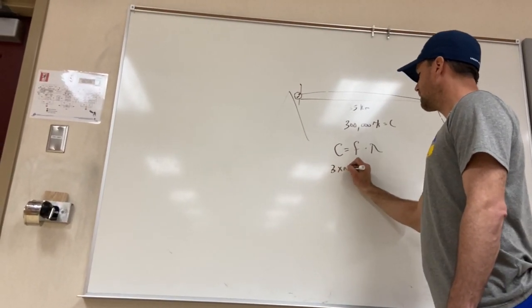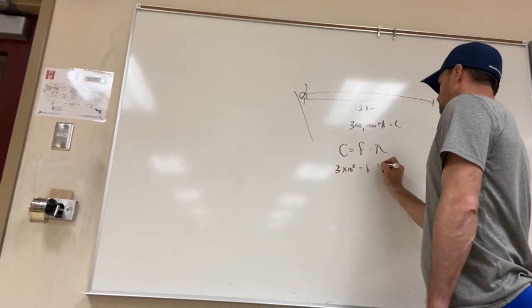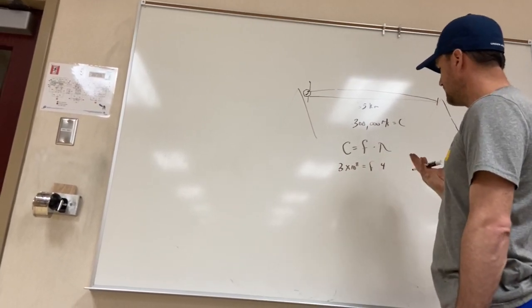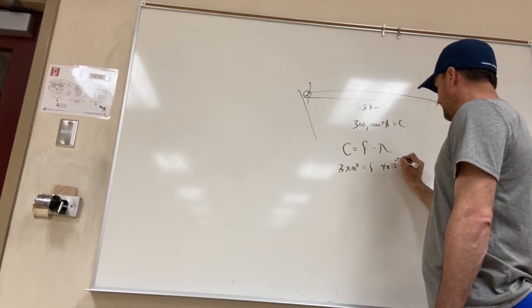So 3 times 10 to the 8 equals F times 400 nanometers. Now that is the shortest wave we can see, which is 4 times 10 to the negative 7 meters.